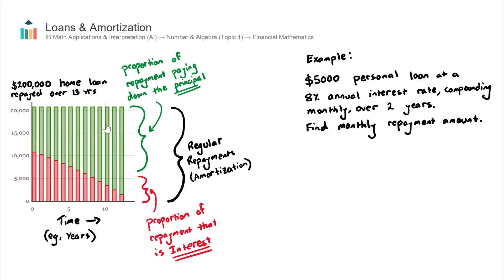I have a column chart here on the left-hand side representing an example home loan repaid over 13 years. Each column represents a regular repayment of about $21,000 per year, made up of two components: paying down the principal — the original $200,000 borrowed from the bank — and the interest shown in red. You can see the trend: the interest amount goes down over time while the principal repayment increases. This isn't a bank design choice — it's the underlying mathematics of the loan.